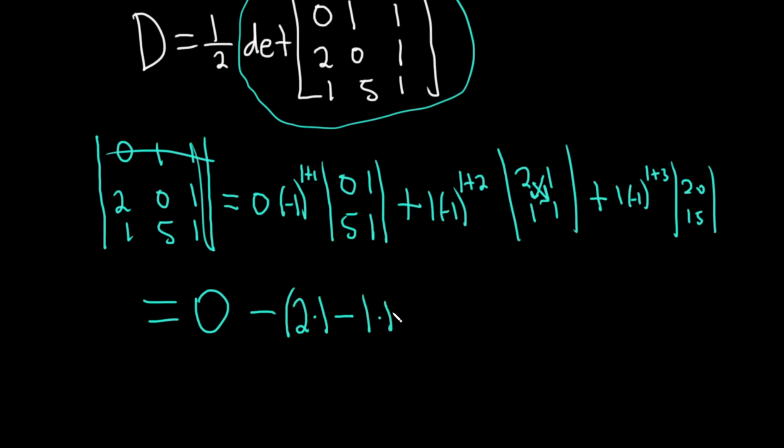Remember, that's how you compute the determinant of a 2 by 2: this times this minus this times this. Over here, this is negative 1 to an even power, because it's negative 1 to the fourth power. And whenever you have negative 1 to an even power, it's always a positive 1. So this is plus 1 times—and then this is 2 times 5, which is 10, minus 0 times 1, which is 0.